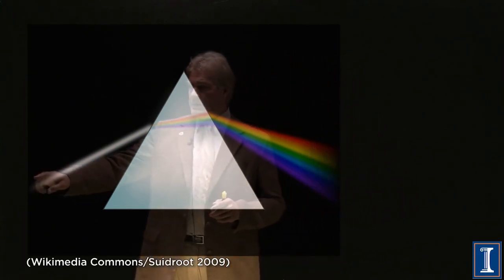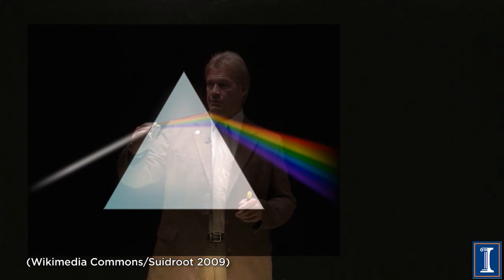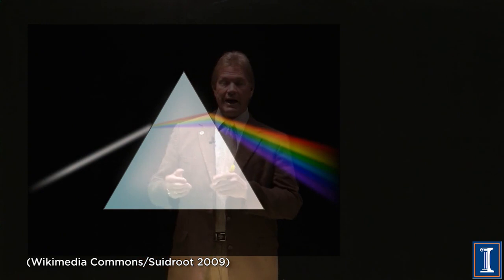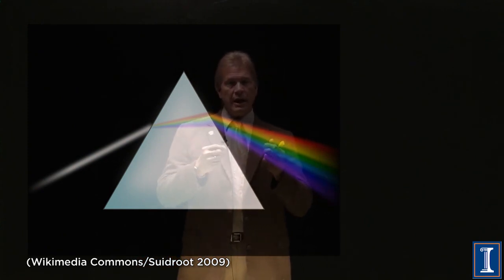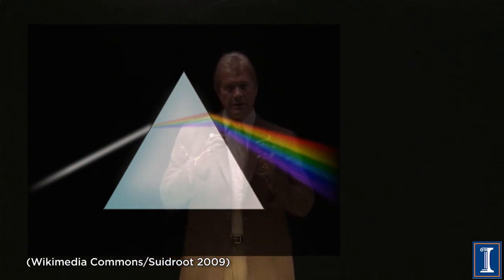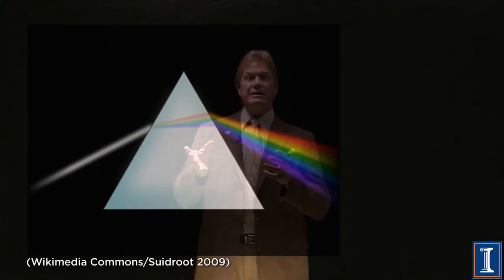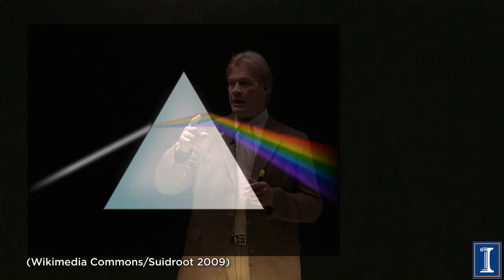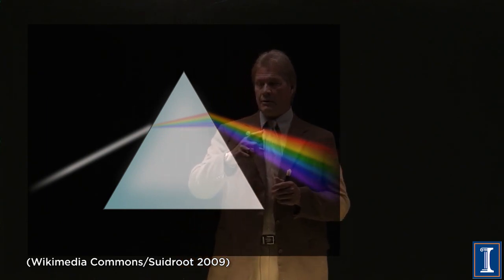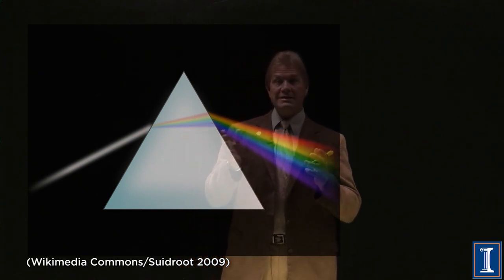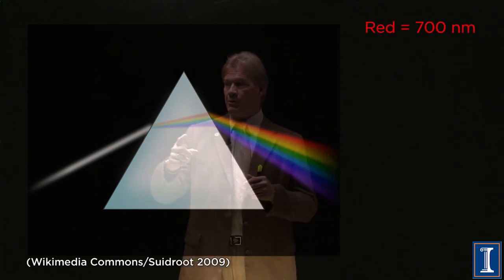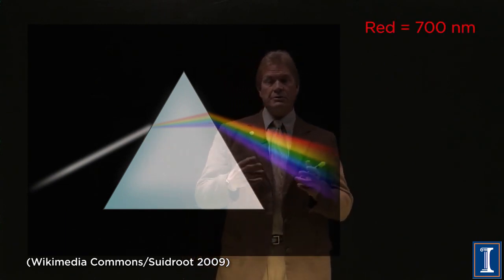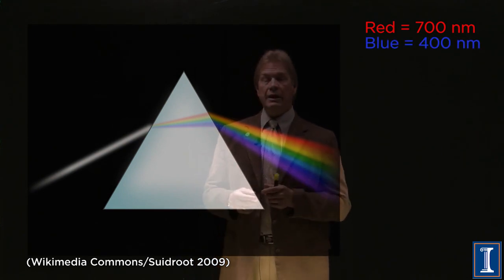What happens is the white light from the sun comes through and hits a certain piece of material. Glass, in this case for a prism, has a characteristic that different wavelengths will go through the prism in slightly different directions — something called the index of refraction. That means it will split out the red light; it won't bend it as much. That's at maybe 700 nanometers wavelength. But the purple and blue light, around 400 nanometers, it will bend much more.